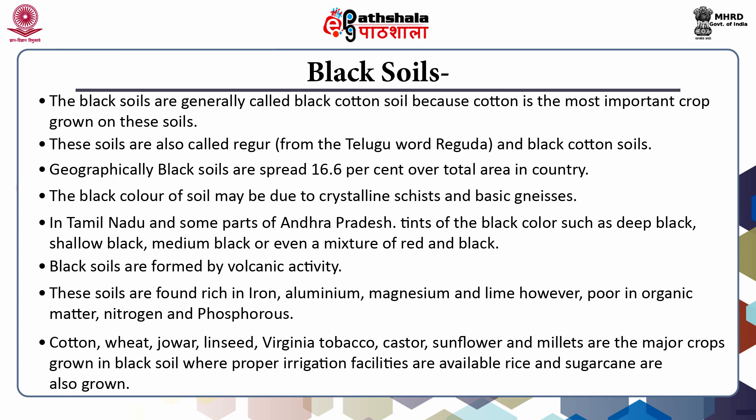The black soil is very retentive of moisture. It swells greatly and becomes sticky when wet in rainy seasons. Under such conditions, it is almost impossible to work on such soil because the plow gets stuck in the mud. However, in the hot dry season, the moisture evaporates, the soil shrinks and broad and deep cracks are visible — often 10 to 15 centimeters wide and up to a meter deep. This permits oxygenation of the soil to sufficient depth and the soil has extraordinary fertility.